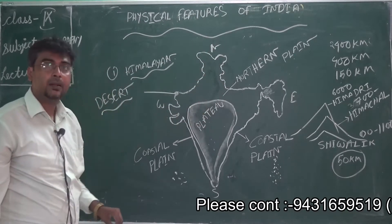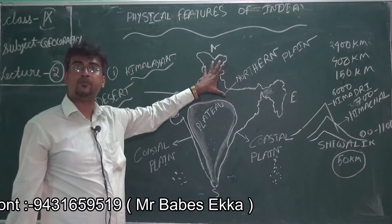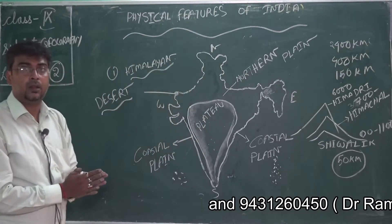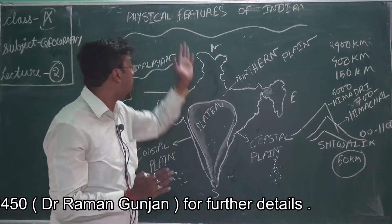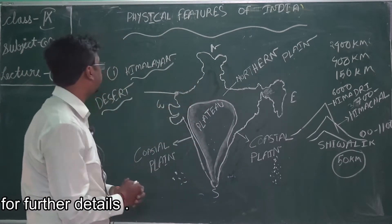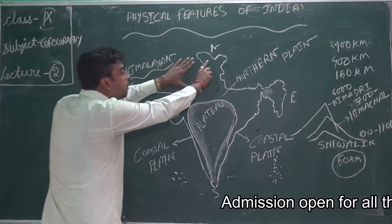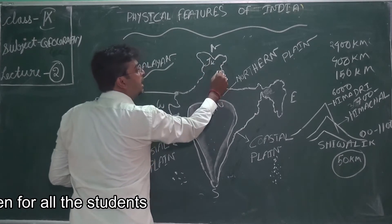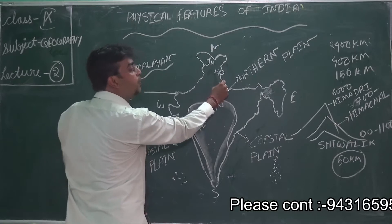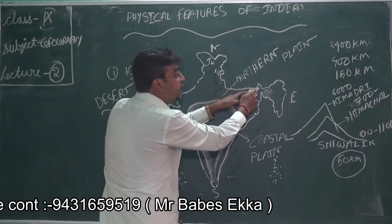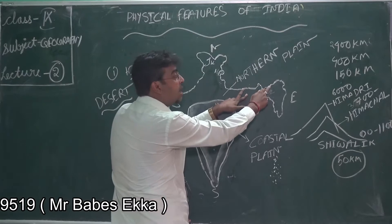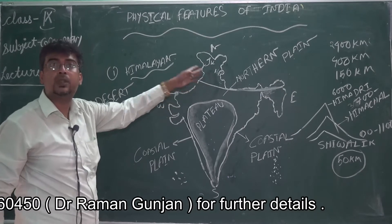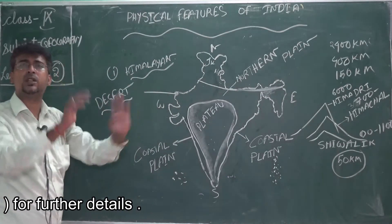Our India has six types of physical features. We will explain all the physical structures. The first is the Himalayas, on the northern side. We know that is Jammu Kashmir, Himachal Pradesh, Uttarakhand, Sikkim, Assam, Arunachal Pradesh — that portion is a part of the Himalayas, that is the total mountainous area.